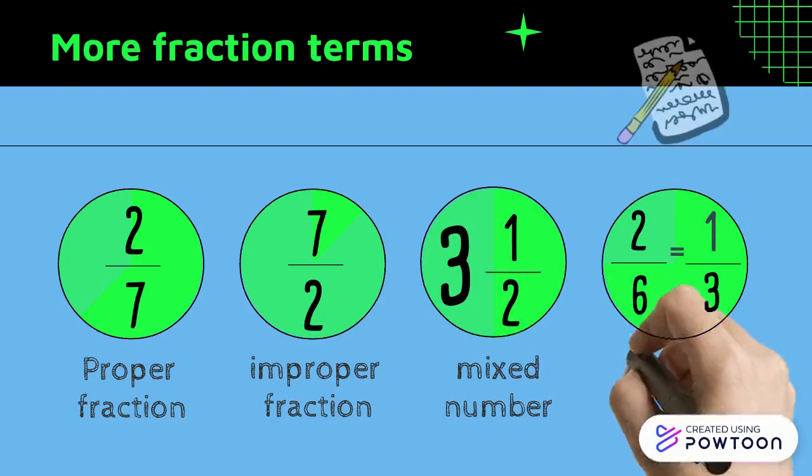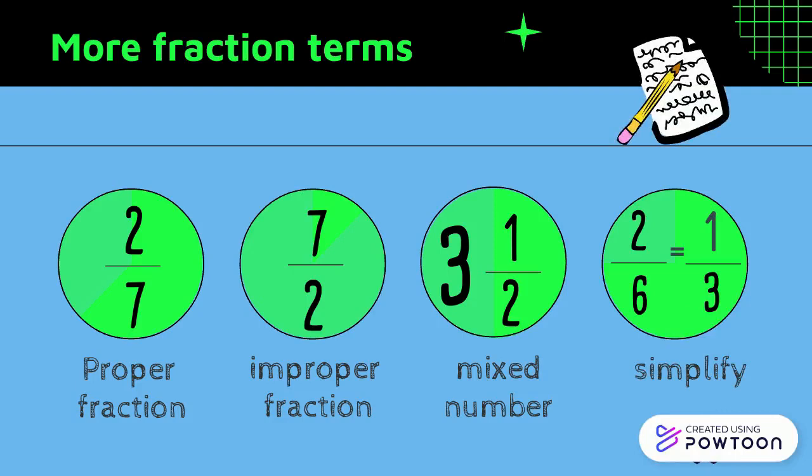And then the last one is simplify. When you are simplifying a fraction, you are getting it in its smallest form. Two over six simplifies down to one third. They both have a two in common that you take out of each fraction.